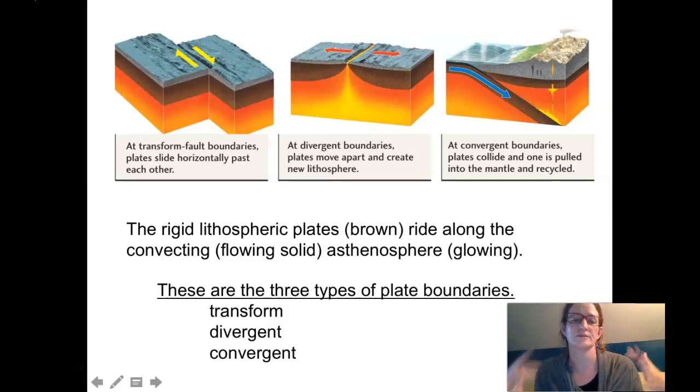As they move apart, new lithosphere is created, new earth is created, and ocean basins get bigger. There are convergent plate boundaries where the plates are coming together and one plate is consumed and recycled back into the asthenosphere.